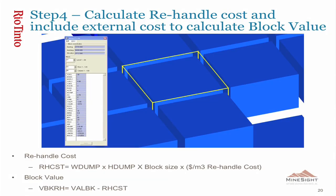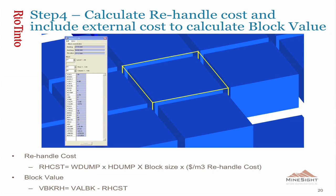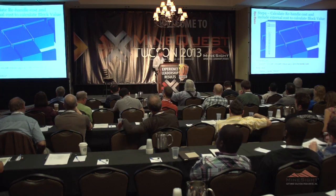The next step is to calculate the re-handle cost and include this external cost in the block value. The variable RHCST is the re-handle cost, and that cost for each block is calculated as: wdump plus hdump, times the block size, times the unit cost of re-handle. This re-handle cost is then included in the original block value. The new block value variable bbkrh equals the original block value plus the negative re-handle cost.